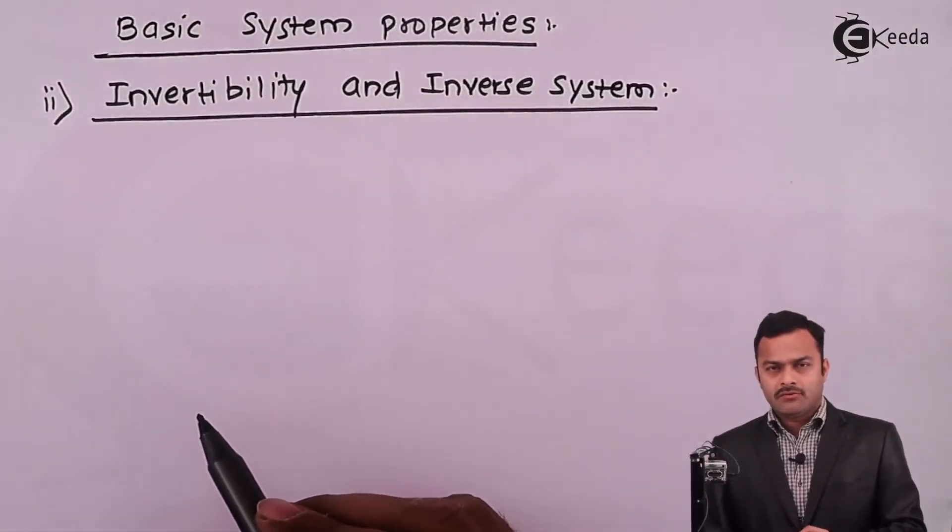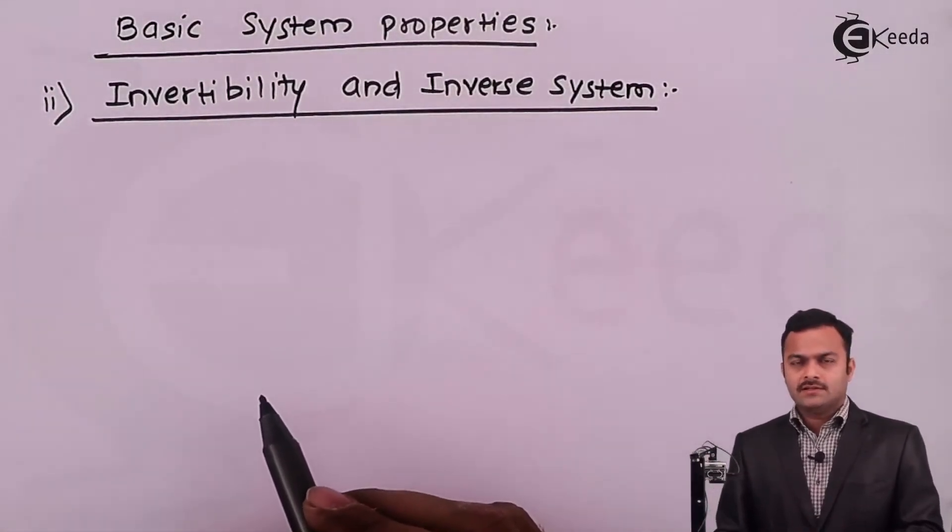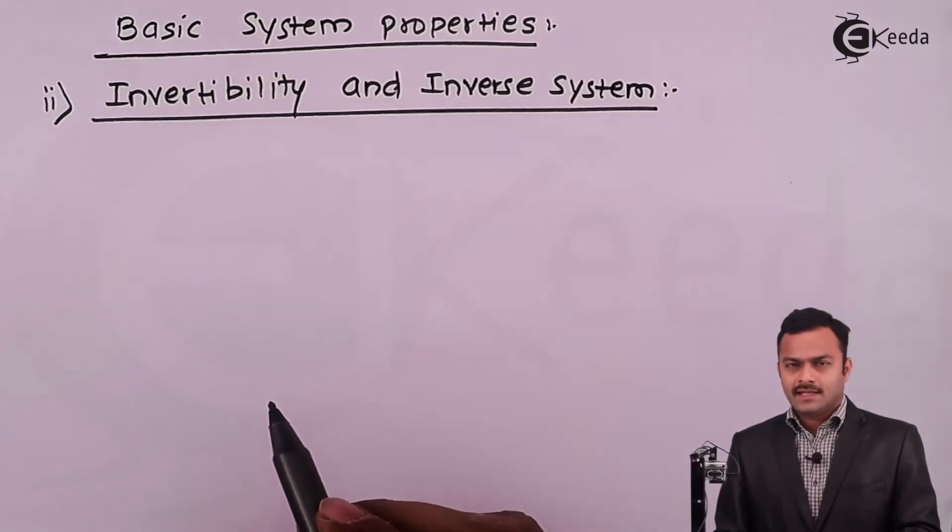So basically, definition of invertibility is this: a system should give you distinct outputs for distinct inputs.